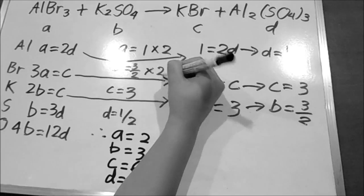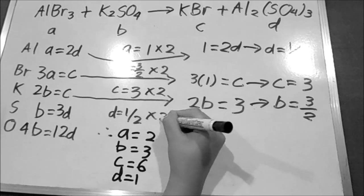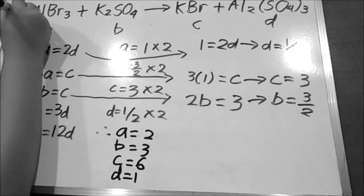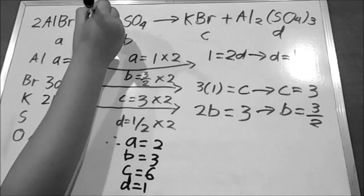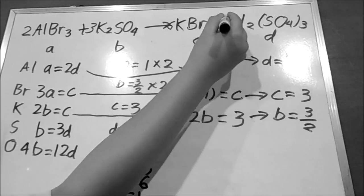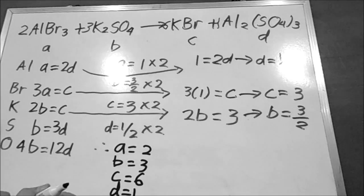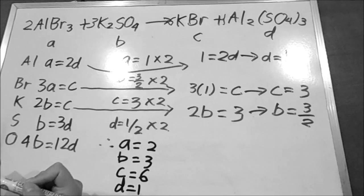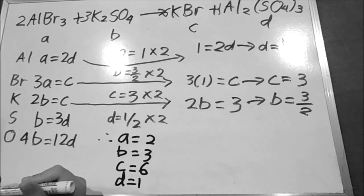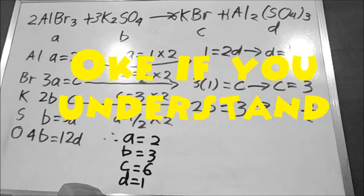We multiply all of them by 2. Since we now know all the values, we can balance the equation. So it becomes 2AlBr3 plus 3K2SO4 equals to 6KBr plus 1 Al2(SO4)3.